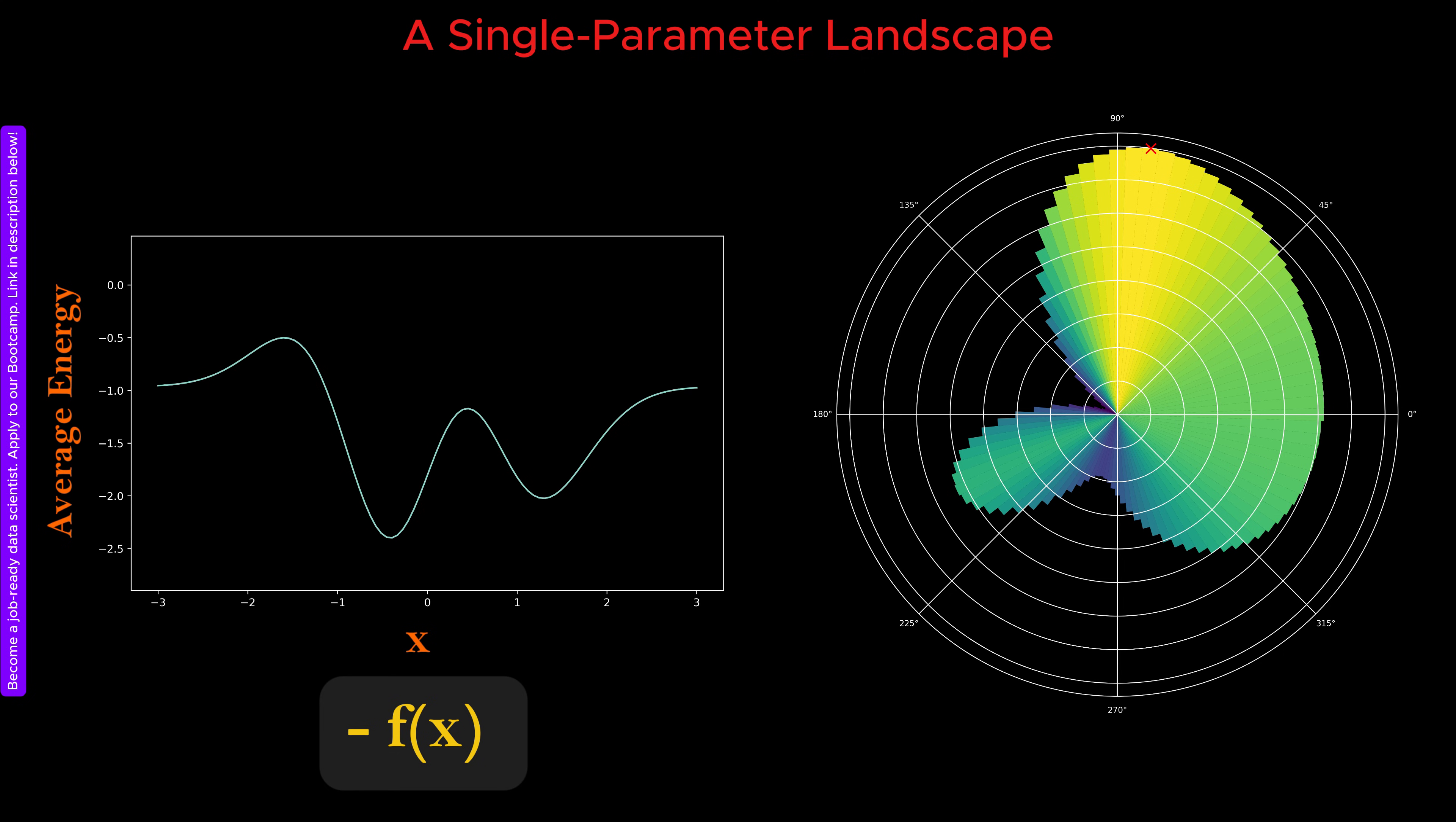The solution is to flip the landscape by multiplying all function values by minus one. This transforms maxima into minima and minima into maxima. Now, when we apply the microscope to this transformed function, the features that correspond to the original minima become clearly visible as prominent maxima.